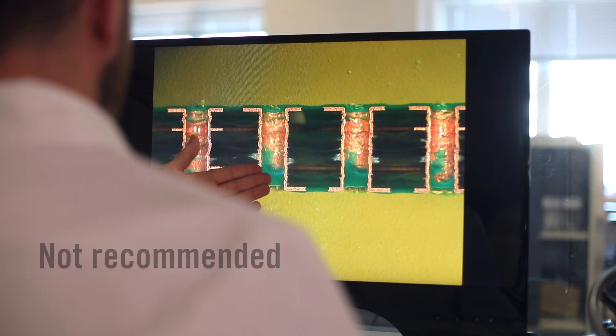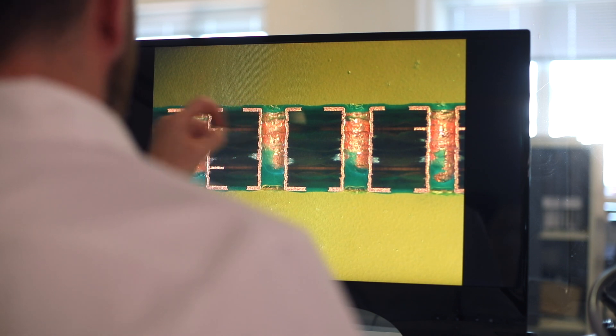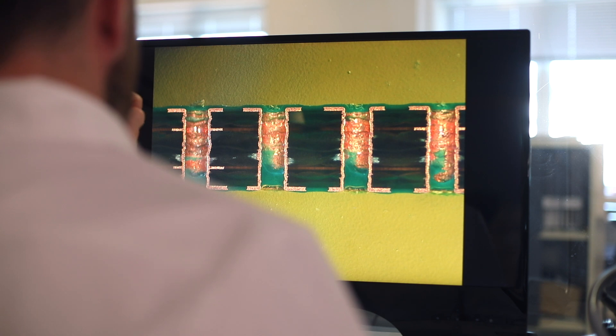Single-sided plugging is not recommended, including Type 2 Tented and Covered, due to concerns over entrapment of chemistry and a hole that is less than 50% filled. There is also a risk of solder balls being present with HASL finishes being stuck in these holes.